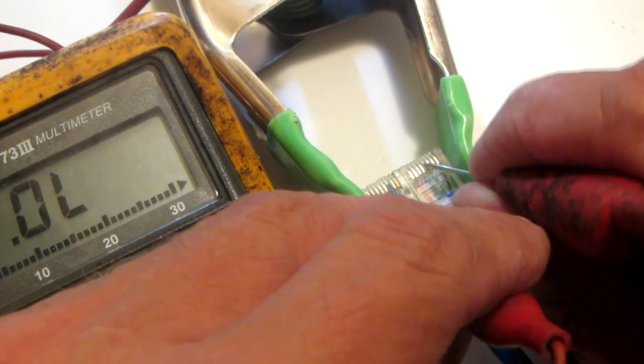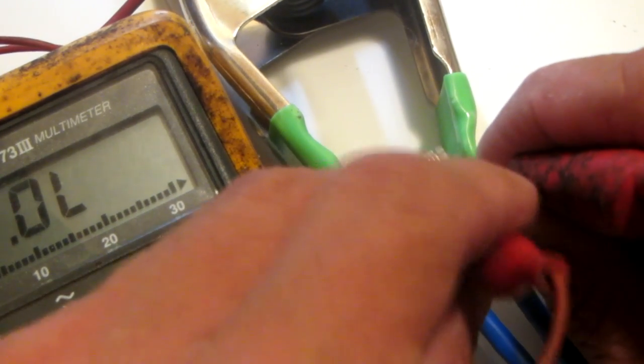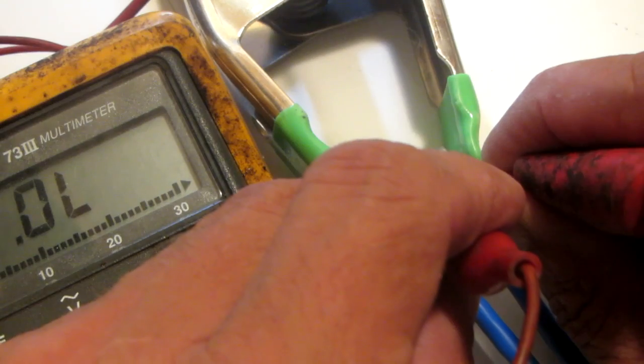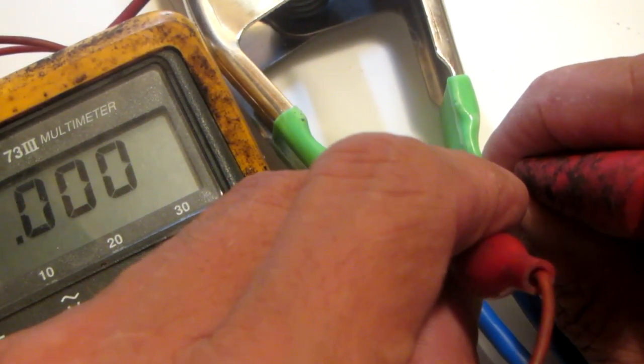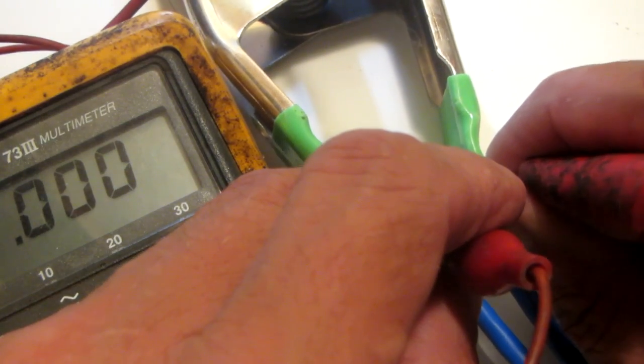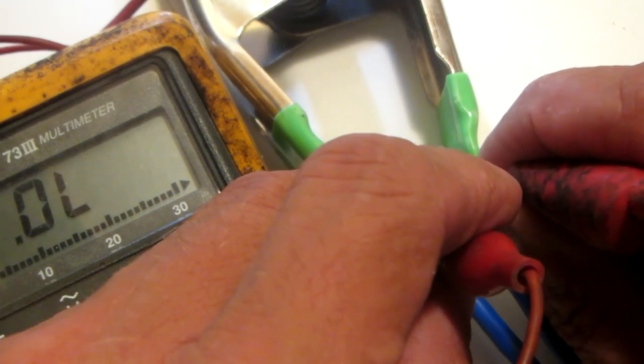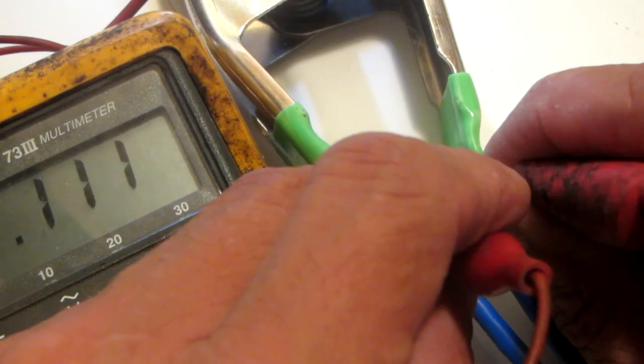The T568A (A is in Alpha) is a crossover cable where the connections crisscross. You can go on the internet and find the wiring pins that are crisscrossed. I'm going through here testing for continuity.